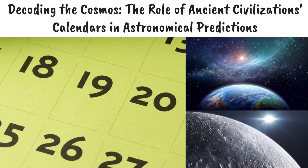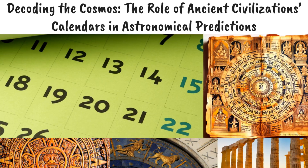Ancient civilizations developed methods to decode the cosmos and predict cosmic events. These systems, reflecting our ancestors' advanced astronomical knowledge, were founded on careful observation and documentation of celestial events, enabling them to predict phenomena like eclipses. The Panchangam, a Hindu calendar, is one such system, akin to those of the Mesopotamians and Greeks, among others. Despite varied approaches, they shared a common goal: understanding and predicting cosmic patterns, highlighting the universal human endeavor to comprehend the universe's rhythms.